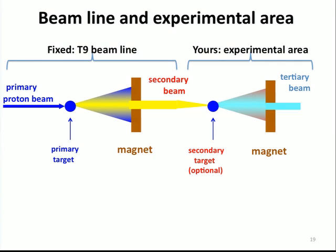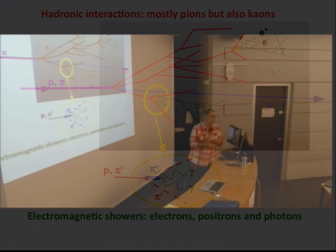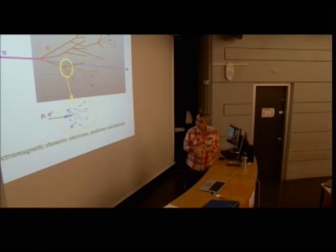Let me tell you more about what happens when primary proton or pion beams hit a target. Mostly you have two types of interactions. Hadronic interactions are where the quarks inside the incoming beam particles interact with quarks inside the atoms of your target. From that you get mostly pions, the red lines you see here, but also some kaons. The second type is electromagnetic showers - when the electric charges of the incoming particle interact with electric charges of particles inside the atoms. From that you get electrons, positrons, and photons. Photons can also come from neutral pion decay.